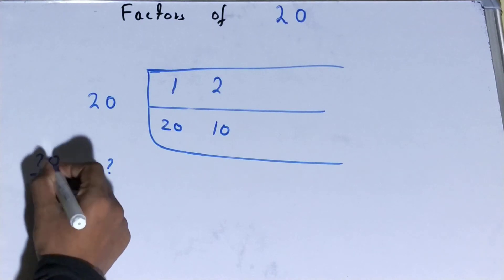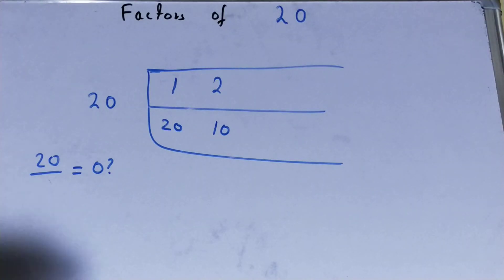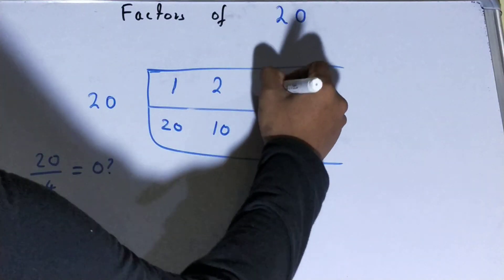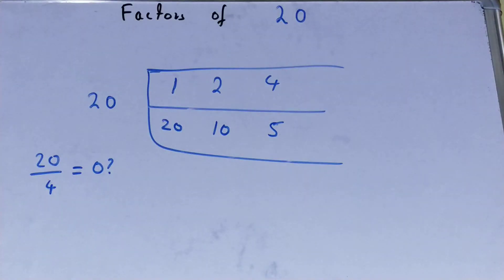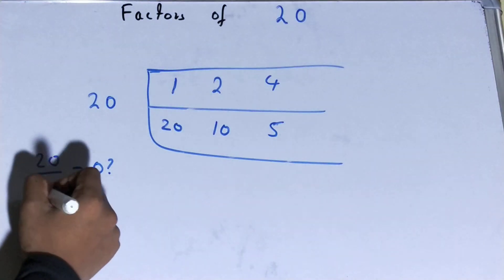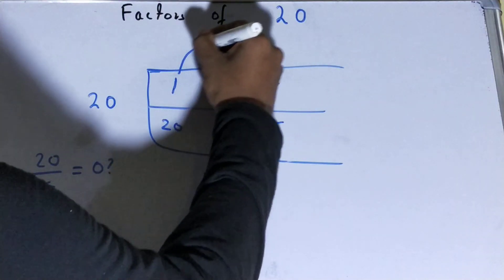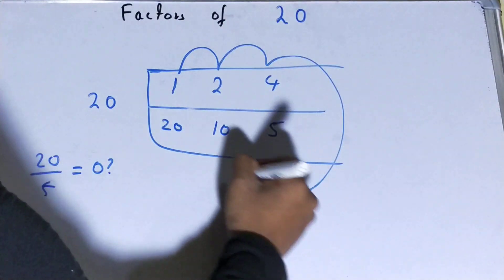Next, if I keep 3, will I get 0? No. If I keep 4, will I get 0? Yes. 4 into 5 times is 20. Next, if I try to keep 5, I already have 5 over here, so I don't need to check and I will stop right here. The work is done.